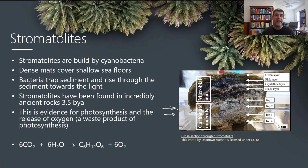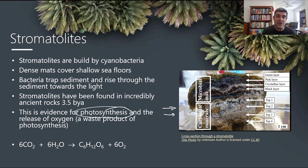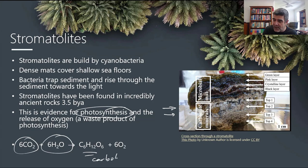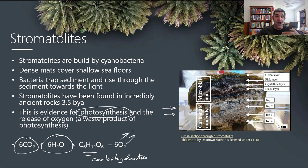Stromatolites have been found in incredibly old, ancient rocks, suggesting these organisms have been on Earth for a very, very long time — and therefore photosynthesis is a very old and ancient process. It was taking carbon dioxide and water and turning it into carbohydrates, specifically glucose, and oxygen gas. That oxygen was building up in the oceans, starting to precipitate some of the iron, and was going to start changing the nature of the atmosphere.